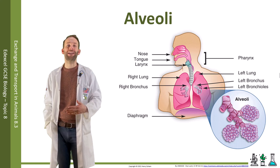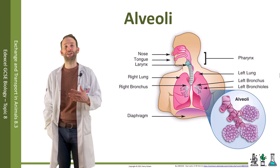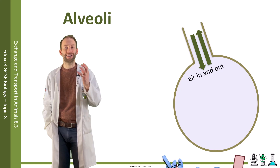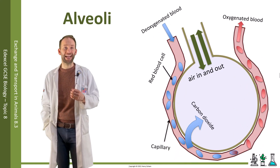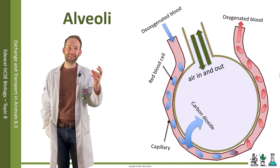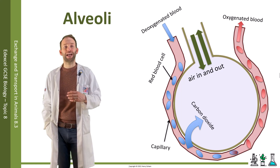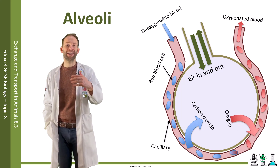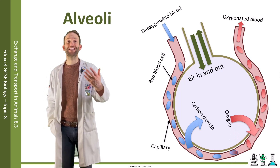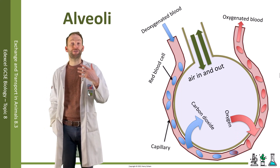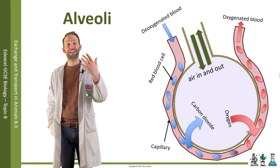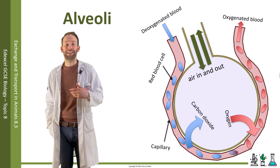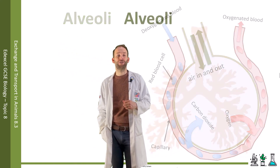Here is a cross section of just one alveolus to show how the blood capillaries are surrounding this little air sac. The blood capillaries carry in deoxygenated blood, and the carbon dioxide then diffuses out of the blood into the alveoli to be exhaled. At the same time, oxygen diffuses from a high concentration in the alveoli into the blood cells to oxygenate the blood, which is then carried off around the body.